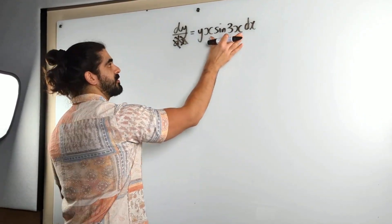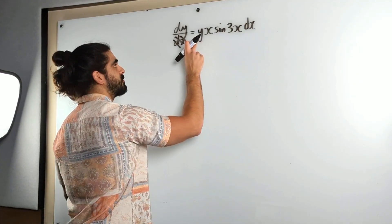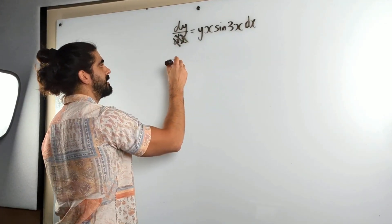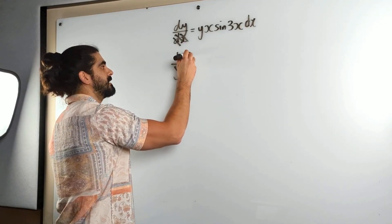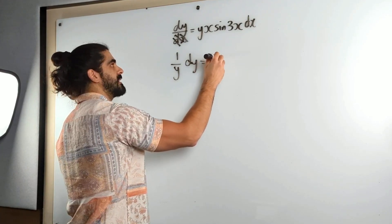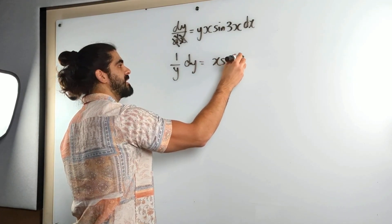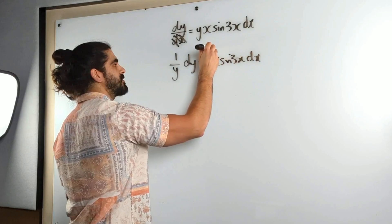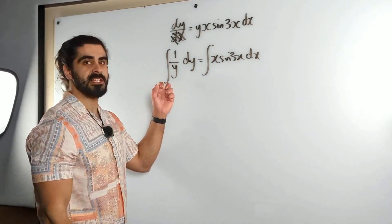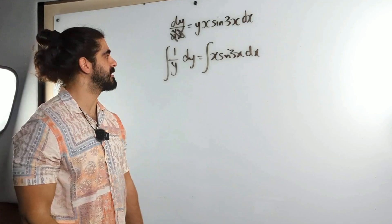So we can integrate the right side with respect to x, but to get the y over to the left side we need to divide by y. It becomes 1 over y, dy is x sin 3x dx. Let me just integrate both sides separately. This one's nice and easy, we know it's ln of the denominator.